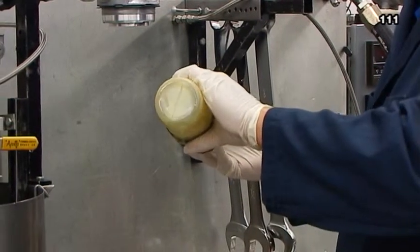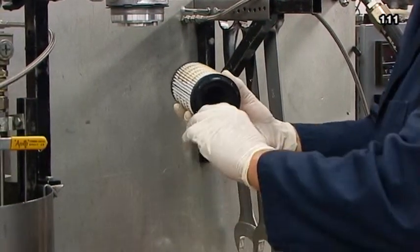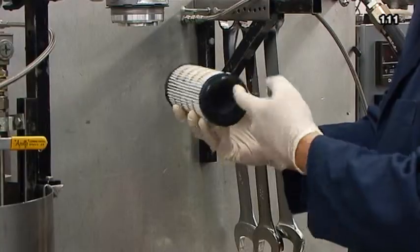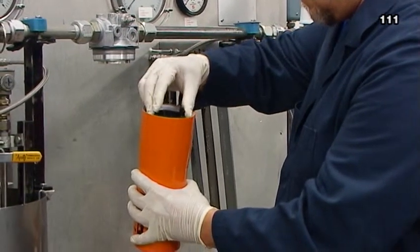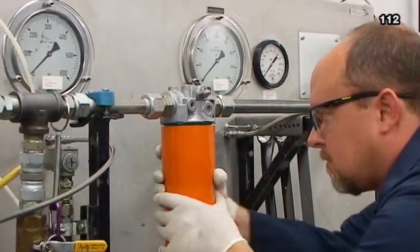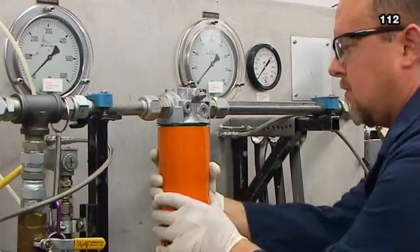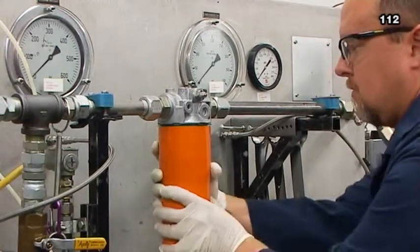In step six, lubricate the new filter cartridge O-ring with clean system oil, and install the filter into the housing. Fit the housing to the filter head as instructions on the housing may indicate. Do not over-tighten.